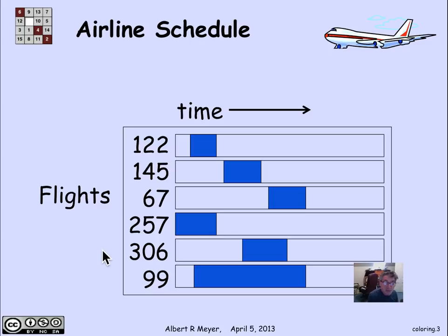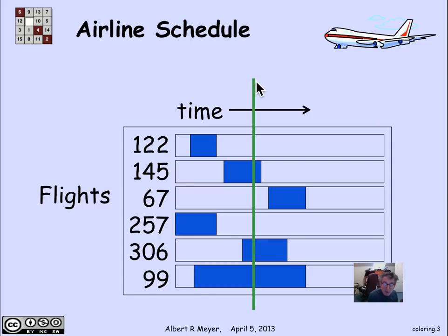With this information, we're trying to figure out how many gates we need. It's easy to see that if you think of a vertical green line sliding across the bar and look at the maximum number of blue intervals the green line ever crosses, it's three. The largest number of planes on the ground at any given moment is three, which means we can get by with three gates.